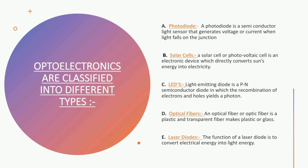Optoelectronics are classified into various types. Five of the following types are photodiode, solar cells, LEDs, optical fibers, and laser diodes.